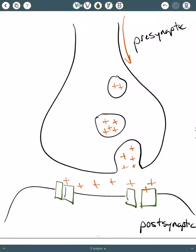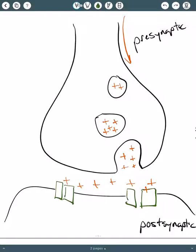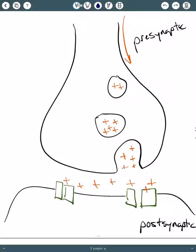If it's an excitatory transmitter that's binding to its receptor, then we might have a positively charged ion that comes through the channel that opens when an excitatory neurotransmitter binds to its receptor. There's different types of receptors, though, and transmitters have multiple different types of receptors.